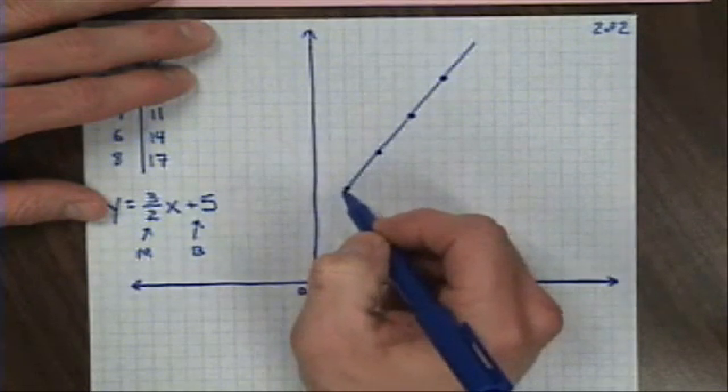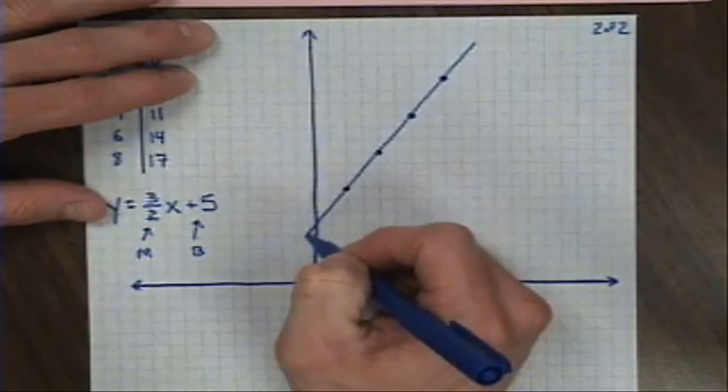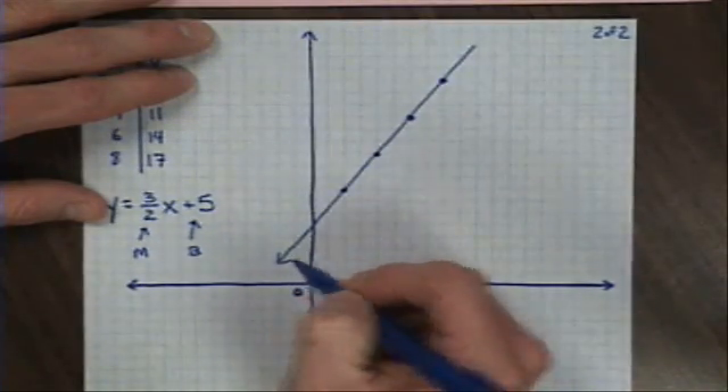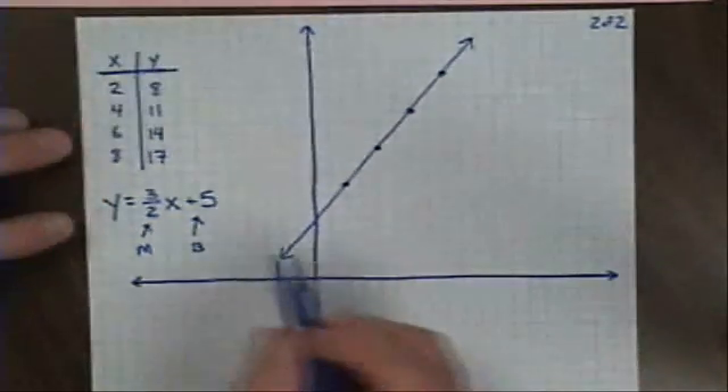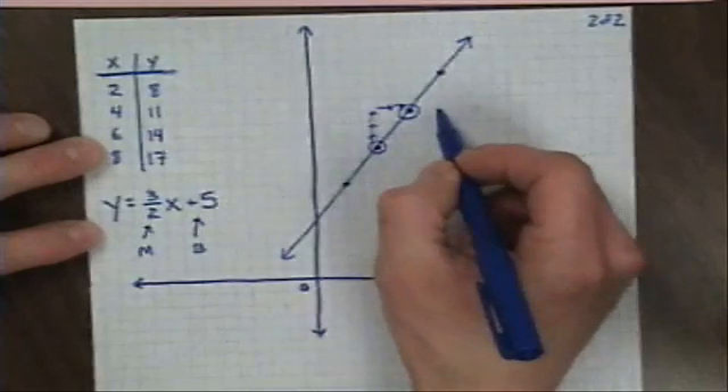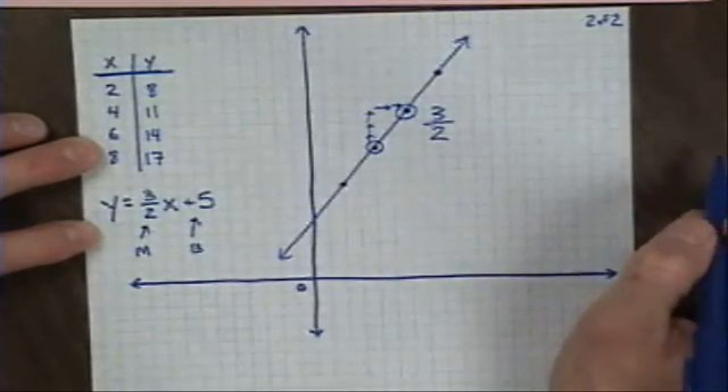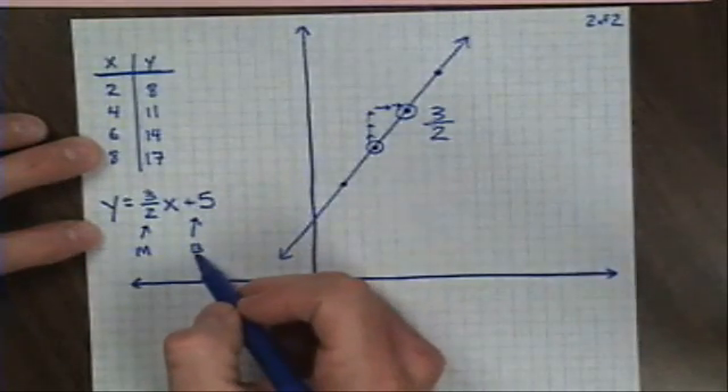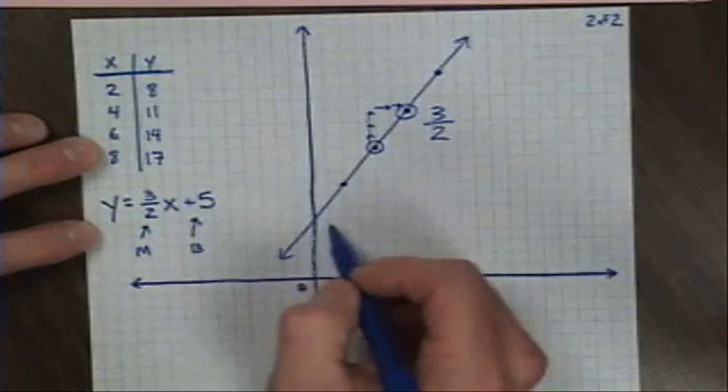What you'll notice is that my slope is supposed to be 3 halves. From any point to any other point, I have to go up 1, 2, 3, and over 2. So my slope of 3 halves is maintained, and I observe that my y intercept is supposed to be a plus 5. That's that point right there.